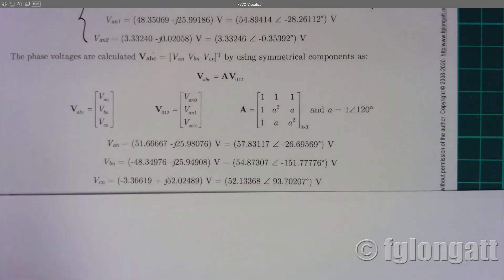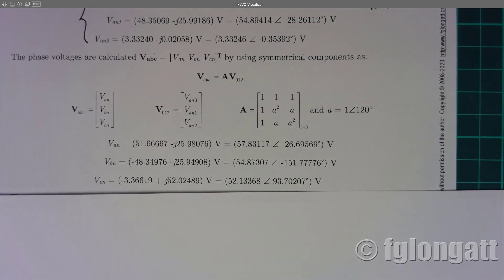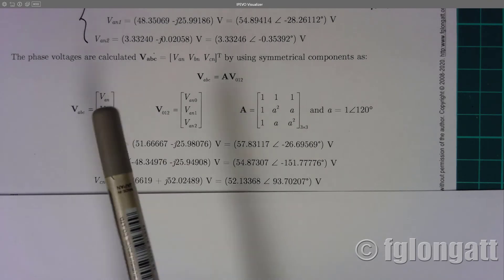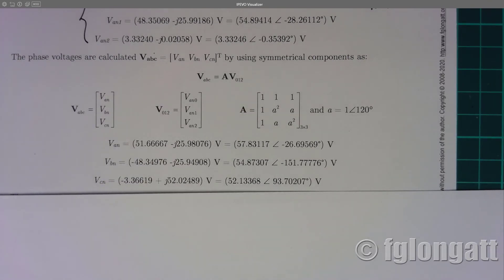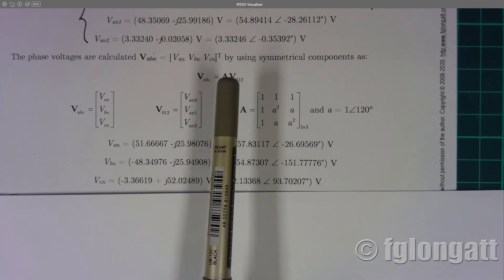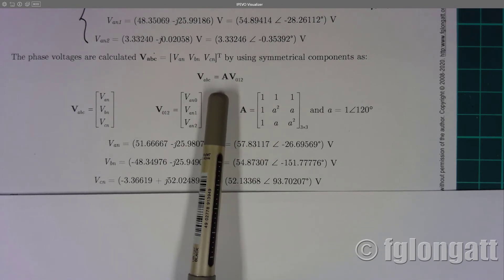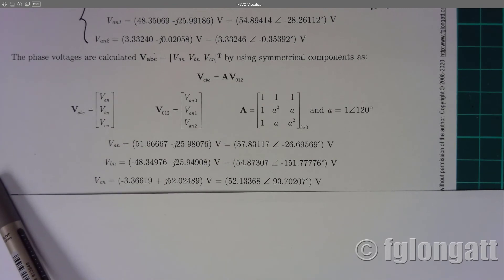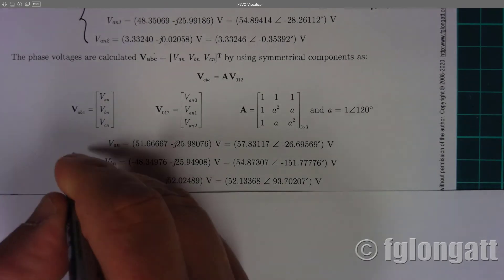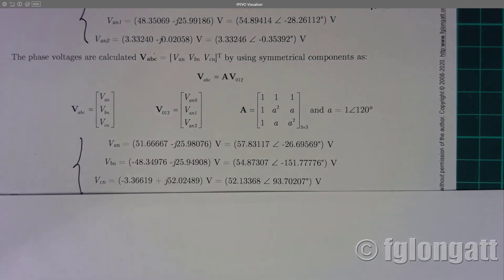The next step is to find the line-to-neutral voltages VAN, VBN, and VCN. Using Fortescue's symmetrical components theory, we multiply the transformation matrix A by the sequence voltage vector. This gives us VAN, VBN, and VCN. Students can perform these calculations using MATLAB, Python, or any similar software.